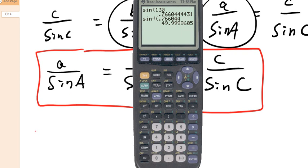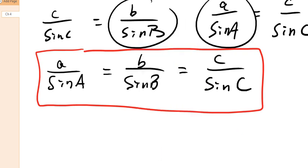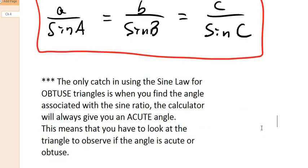So, you're going to have to go back and just make sure that you've got the right angle. So, that's the only catch. When you solve for an angle, and you know it's an obtuse angle, your calculator still will give you only an acute angle. It only ever does that. Because there's no way for the calculator to know the difference. So, let's just take a moment to type that out here. So, the only catch in using the sine law here for obtuse triangles is that when you find the angle associated with a sine ratio, it's always going to give you an acute angle. Your calculator will always give you an acute angle. That's just the way they're set. Because they don't know if you're looking for the obtuse version or the acute version. So, that means that you're going to have to look at the triangle to observe if the angle is actually acute or if it's obtuse.